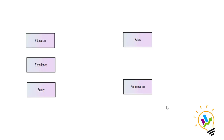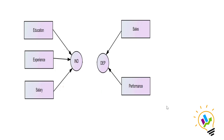On the left side we have three variables which are independent variables, and on the right side we have two variables which are dependent variables. Now we need to find the correlation between the independent variables and the dependent variables.